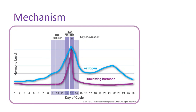There are three results: low fertility, high fertility, and peak fertility. Low fertility means the egg is not yet prepared to release. High fertility means it is going to release soon. Peak fertility means it is about to release.